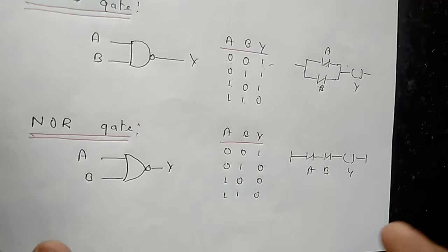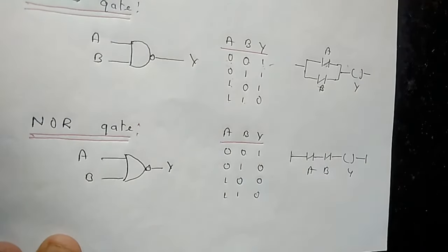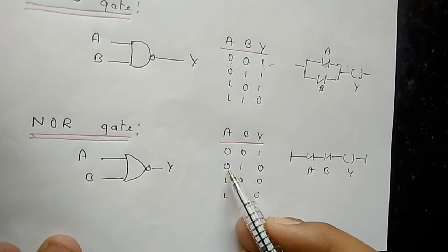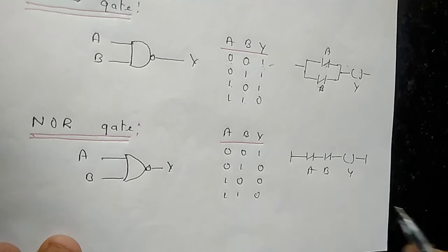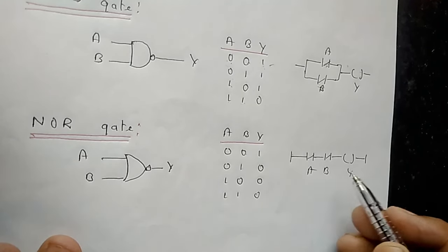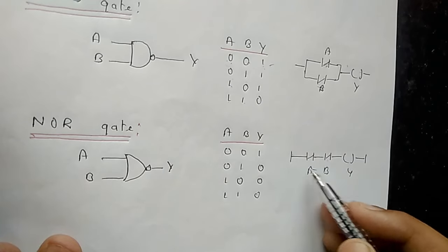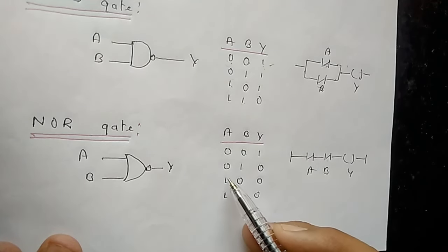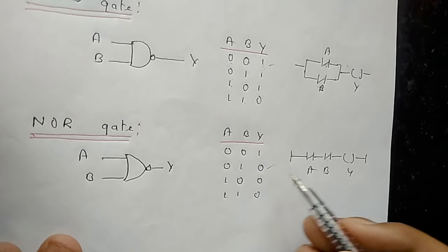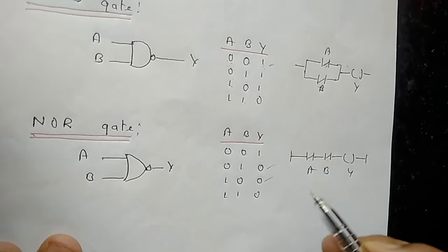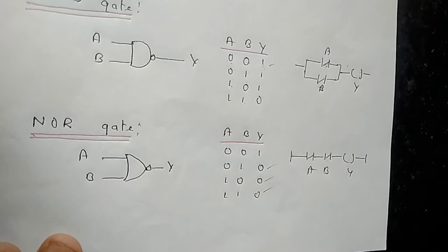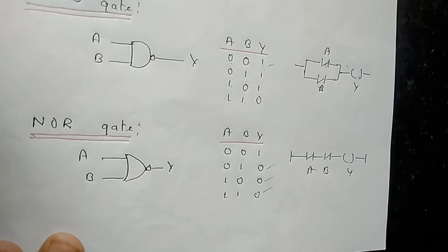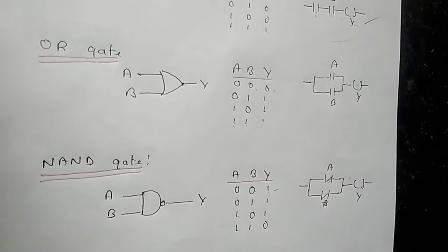Now last is the NOR gate. We again use normally closed contacts. In the second condition, if we supply power to B, it acts as normally open, so the whole circuit acts as normally open and the bulb does not glow. The same repeated condition holds for states three and four. So I hope you understand — especially the NAND gate and NOR gate use normally closed contacts.